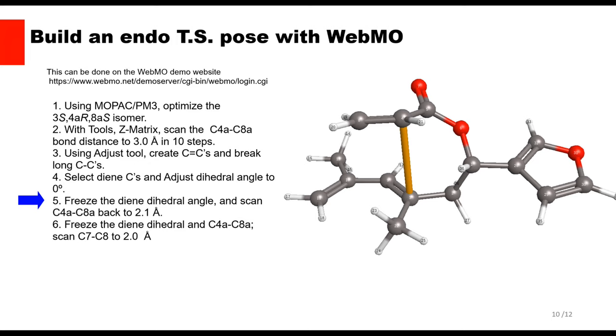Now move the dienophile back to within partial bonding distance of the diene. Use the ZMatrix editor to select the C4A, C8A distance and scan it to about 2.1 angstroms.